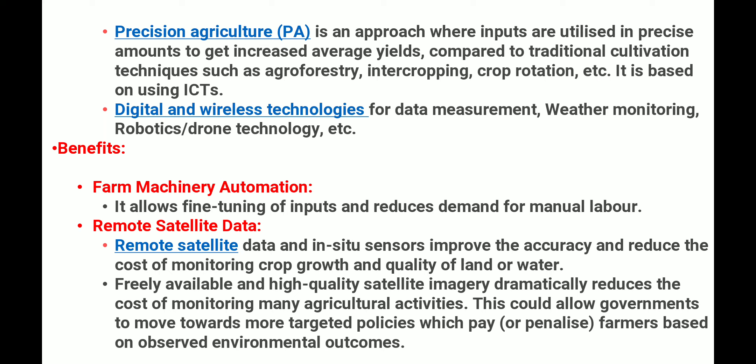इसके benefits क्या होंगे? Farm machinery automation — इसका मतलब है fine tuning होगी inputs की और reduce किया जाएगा demand for manual labor। Remote satellite data and in-situ sensors जो है वो accuracy को improve करेंगे, reduce करेंगे cost of monitoring crop growth, quality of land or water। Freely available and high quality satellite imagery dramatically reduce करेगी cost of monitoring many agriculture activities, और government को more targeted policies की तरफ move करने में help करेगी।